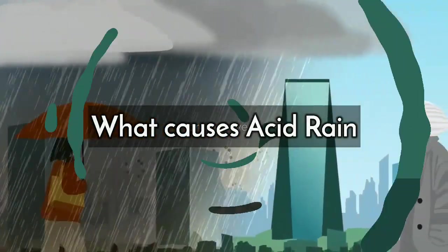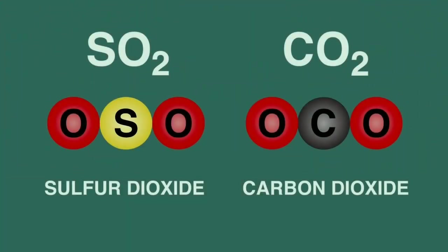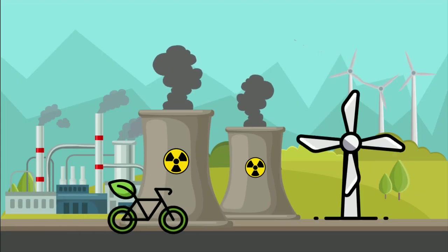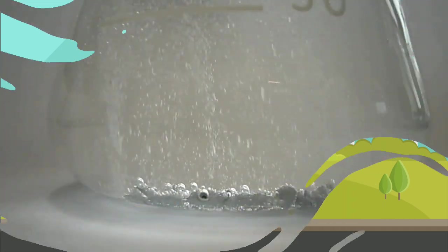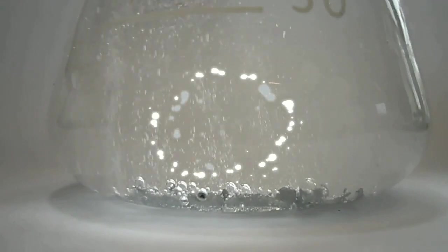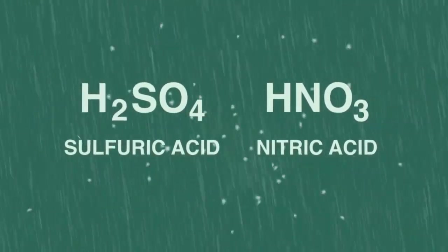What causes acid rain? Acid rain results when sulfur dioxide and nitrogen oxides are emitted into the atmosphere. When humans burn fossil fuels, sulfur dioxide and nitrogen oxides are released into the atmosphere. Those air pollutants react with water, oxygen, and other substances to form airborne sulfuric and nitric acid.